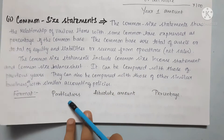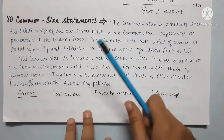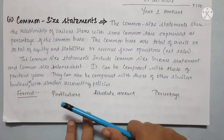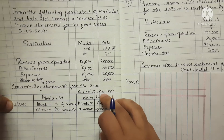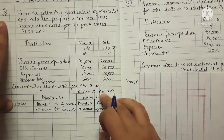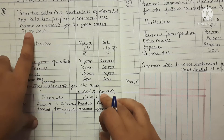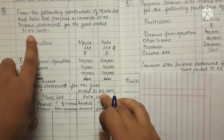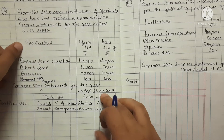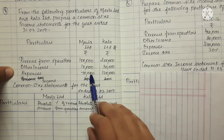The format is very simple: Particulars, Absolute Amount, and Percentage. Now, let's prepare the first question. From the following particulars of Maria Limited and Kala Limited, prepare a common-size income statement for the year ended 31st March 2019. We have the income statement with two companies.